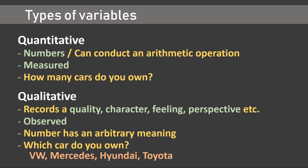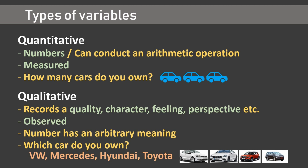There are two types of variables for data that is collected: quantitative and qualitative. A quantitative variable provides decisions based on numbers; we can conduct arithmetic operations on such data since it can be measured. Answers to questions like 'how many cars do you own?' constitute a quantitative variable. For a qualitative variable, as the term suggests, it records a quality, character, feeling, or perspective. Such data is always observed and a number has an arbitrary meaning. Responses to questions like 'which type of car do you own?' result not in a number but in the brand of the car.